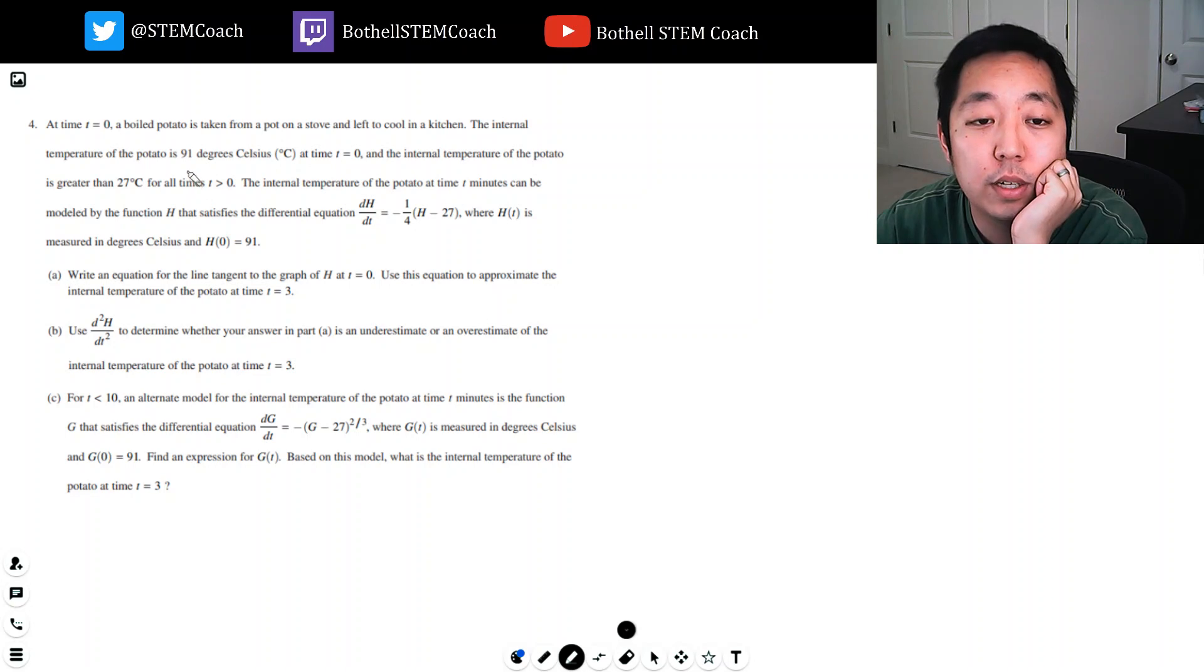The internal temperature of the potato is 91 degrees Celsius at time t equals zero, and the internal temperature of the potato is greater than 27 degrees C for all times t greater than zero. The internal temperature of the potato at time t minutes can be modeled by the function h that satisfies the differential equation, where h(t) is measured in degrees Celsius. So it starts off at 91 degrees and it stays above 27 degrees.